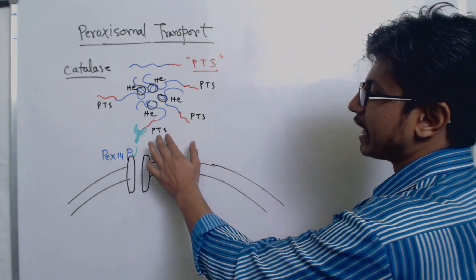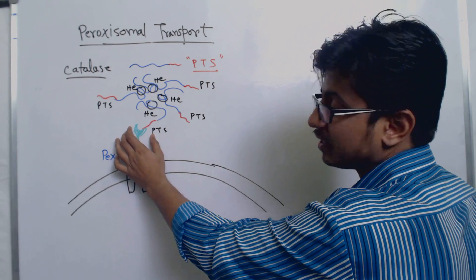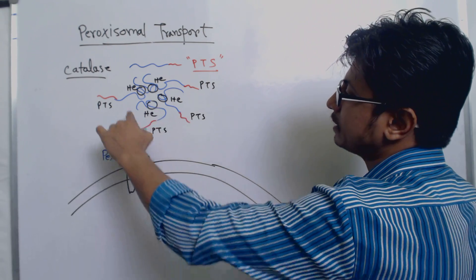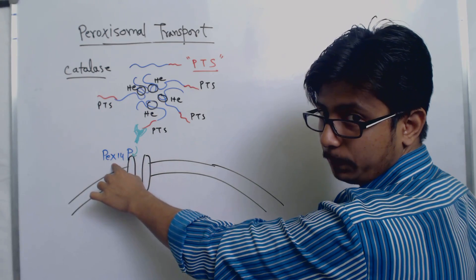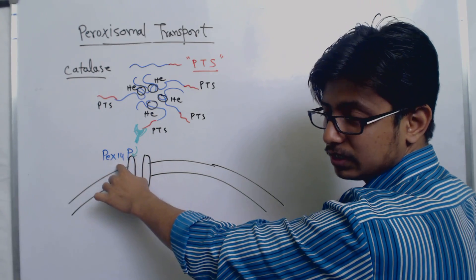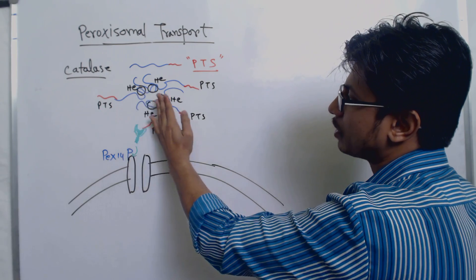When you have the PTS identified by the PTS1R, then this PTS1R along with the rest of the complex of the polypeptide will interact with PEX14P.